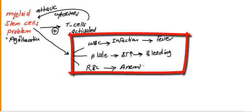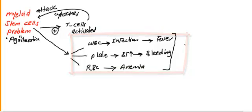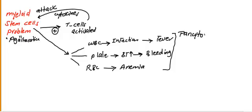These are the clinical features of hypoplastic anemia. If all three of these constituents become damaged, that will lead to pancytopenia. Whenever you see pancytopenia in any patient, that means it is a bone marrow problem.